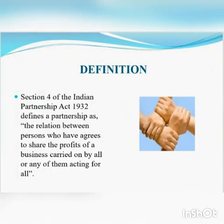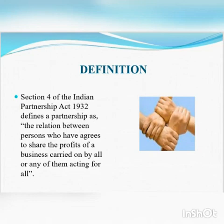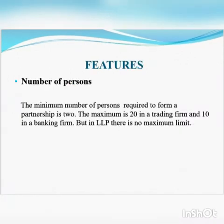Definition of partnership: In India, partnership concerns are governed by the Indian Partnership Act of 1932. Section 4 of the Indian Partnership Act 1932 defines partnership as: 'It is the relation between persons who have agreed to share the profits of a business carried on by all or any of them acting for all.' Next topic: features of partnership. First one — number of persons: the minimum number of persons required to form a partnership is 2, the maximum is 20 in a trading firm and 10 in a banking firm. The minimum limit is fixed by the Partnership Act 1932 but the maximum limit is prescribed by the Companies Act 2013.